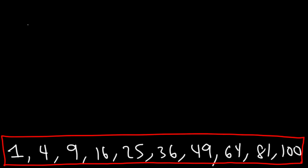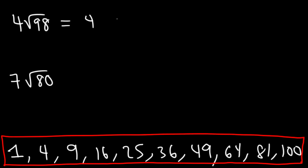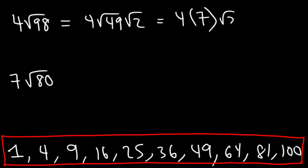Try these two problems: 4√98 and 7√80. For 4√98: 49 goes into 98, and we write 98 as 49 times 2. The square root of 49 is 7, and we multiply 4 by 7 to get 28. So the final answer is 28√2.